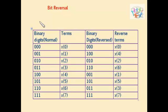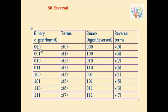Since we have 8 input sequences, we use 3 binary digits and write indices from 0 to 7: 0, 1, 2, 3, 4, 5, 6, and 7. Now we need to reverse these binary digits.